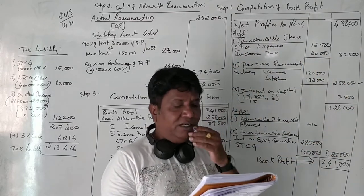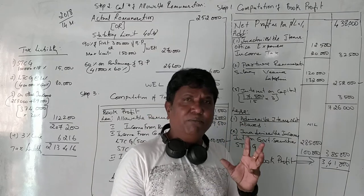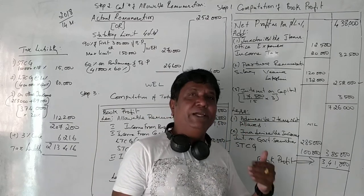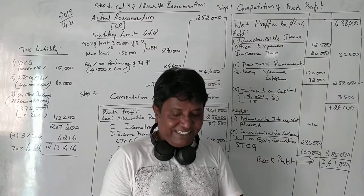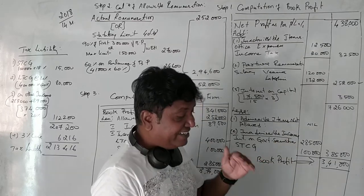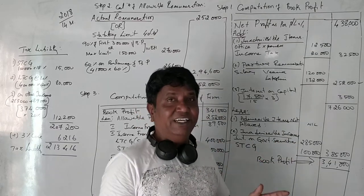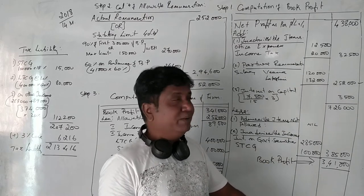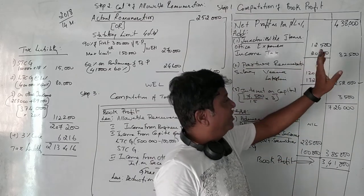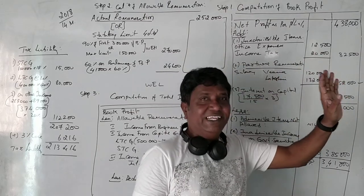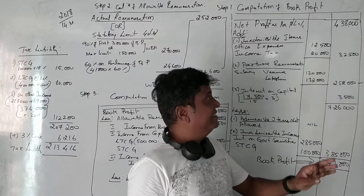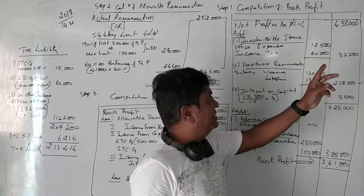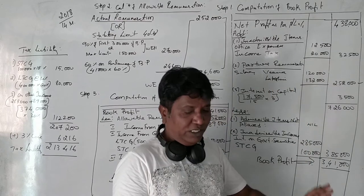Next, salary to employees is a business expense. Income tax is always an inadmissible business expense, so Rs. 20,000 is taken as inadmissible. In total, there were two inadmissible items: Rs. 32,500 taken as the total inadmissible amount.